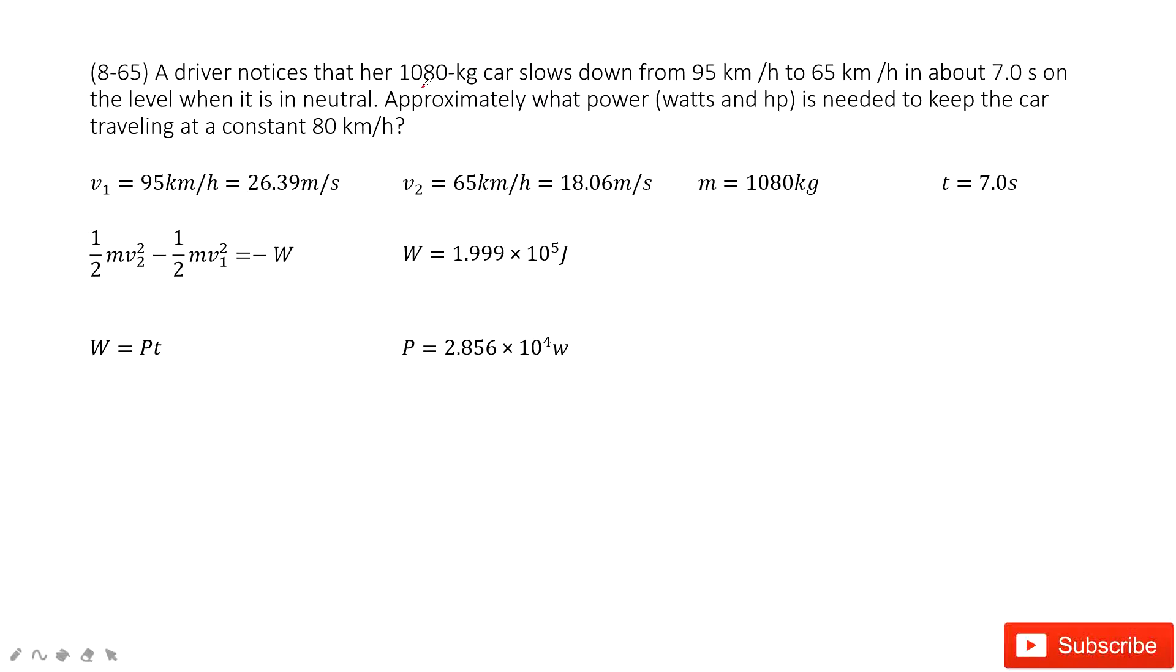You can see the mass of the car is given and the initial velocity, final velocity are given. You need to convert the unit from kilometer per hour to meter per second, right? And then the time taken is given for this change of velocity. It asks you to find the power. How can you do that?